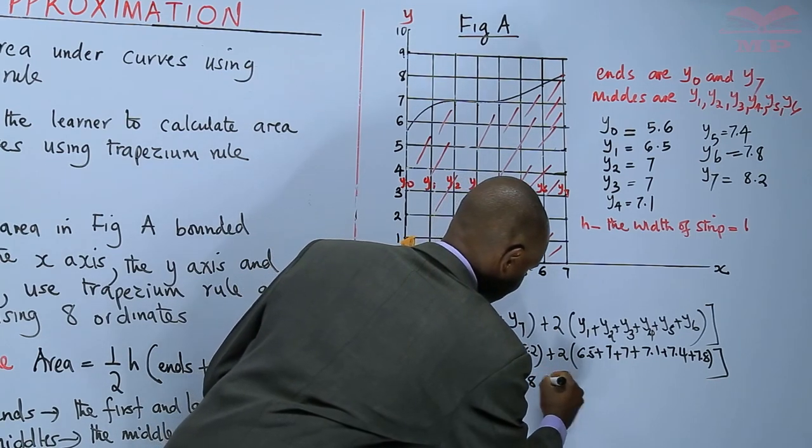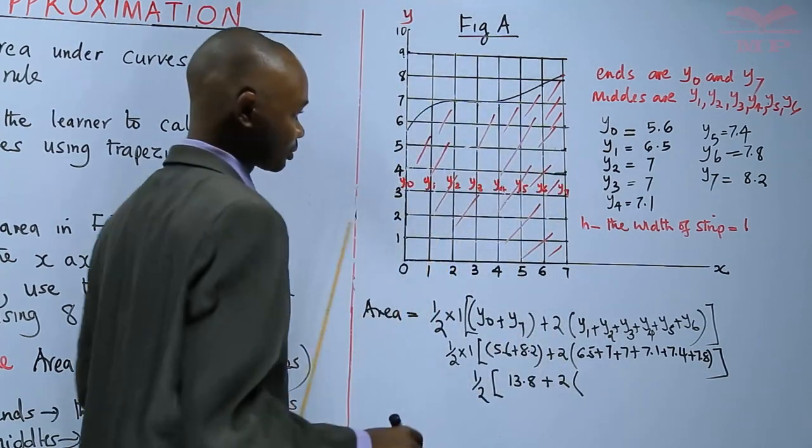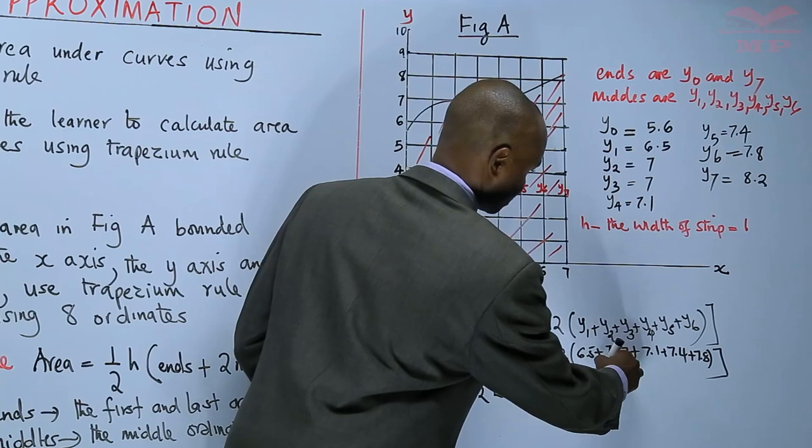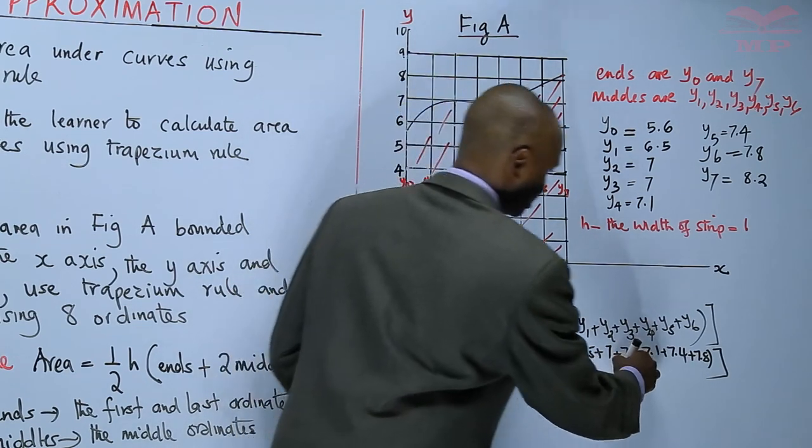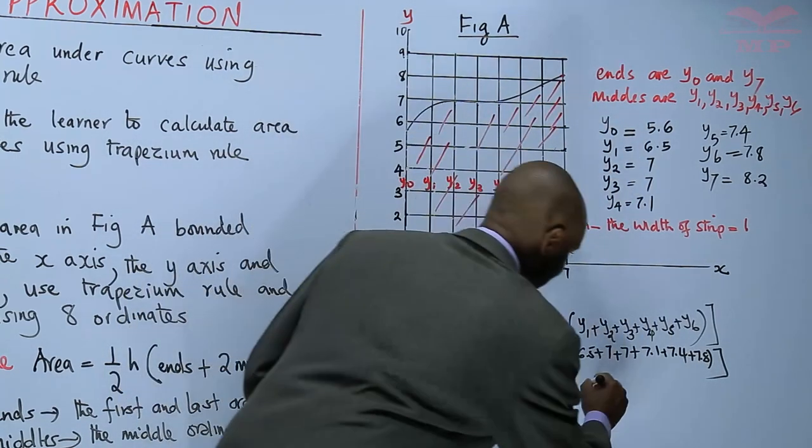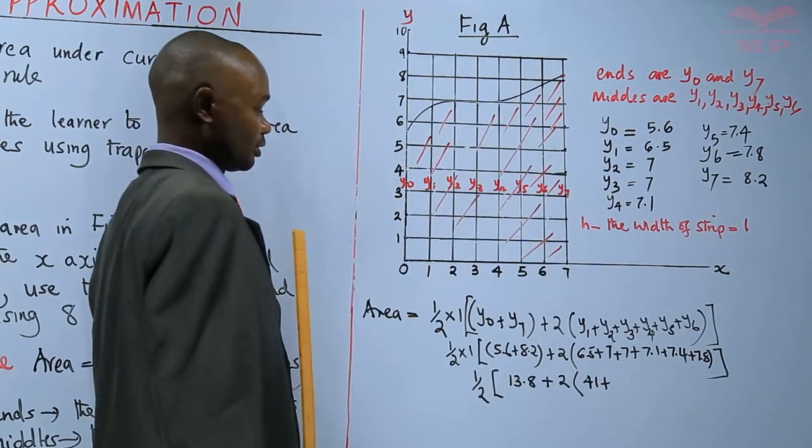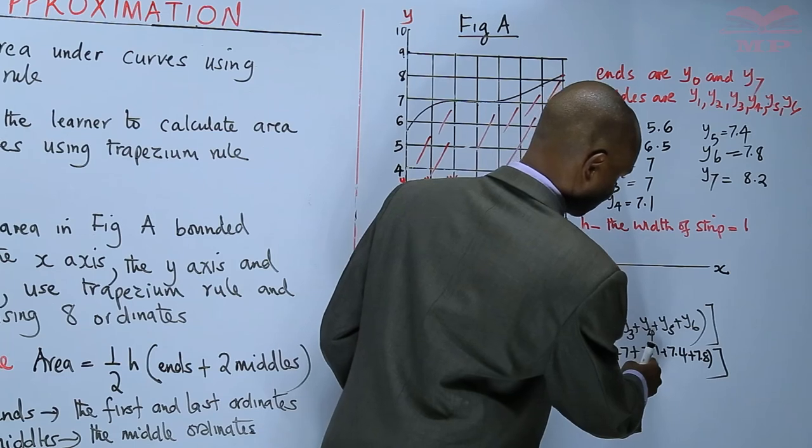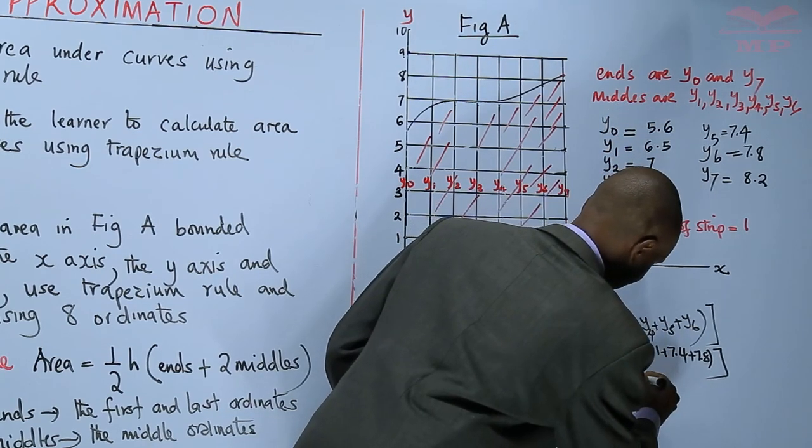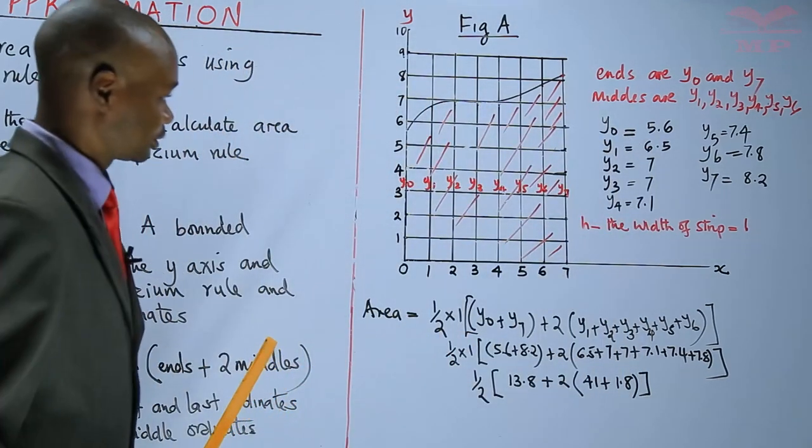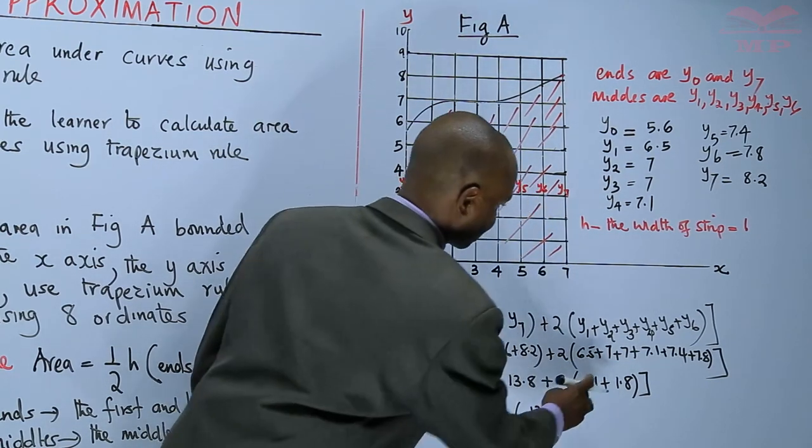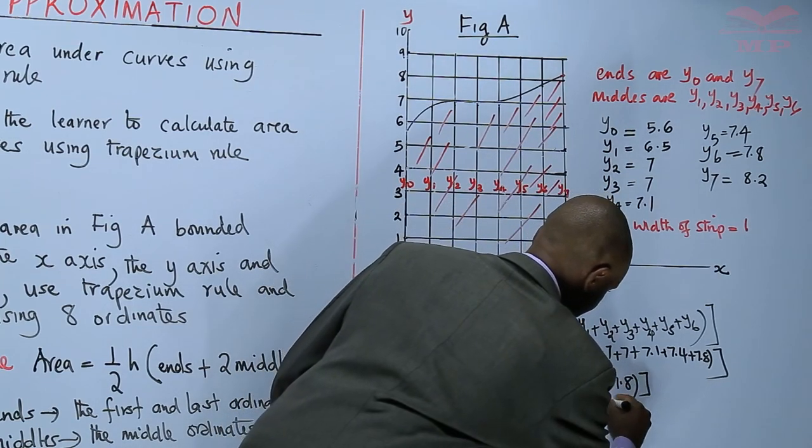13.8 plus twice into, we shall have the easy way to count these. 6 plus 7 is 13, 13 plus 7 is 20, 20 plus 7 is 27, 27 plus 7 is 34, 34 plus 7 is 41. Then count the decimal places. 0.5 plus 0.1 is 0.6, 0.6 plus 0.4 is 1, 1 plus 0.8 is 1.8. It is a half into 13.8 plus 2 into 42.8 square units.